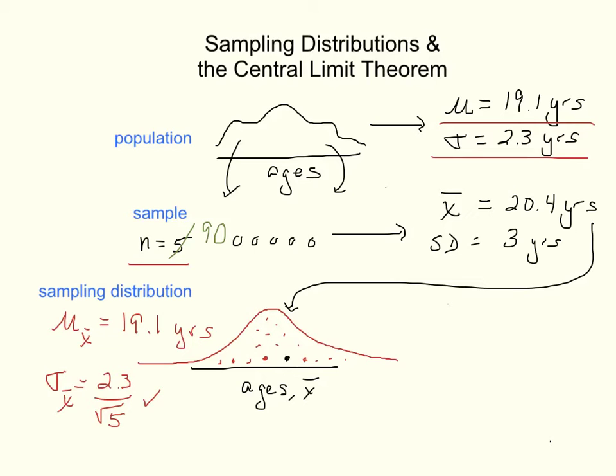Well, the sampling distribution would still be centered at 19.1, but the standard deviation would shrink by a lot. It now would be 2.3 divided by the square root of 90. And what that means visually is that our sampling distribution would be much tighter. It will still be centered at the same spot, but it will be much tighter.